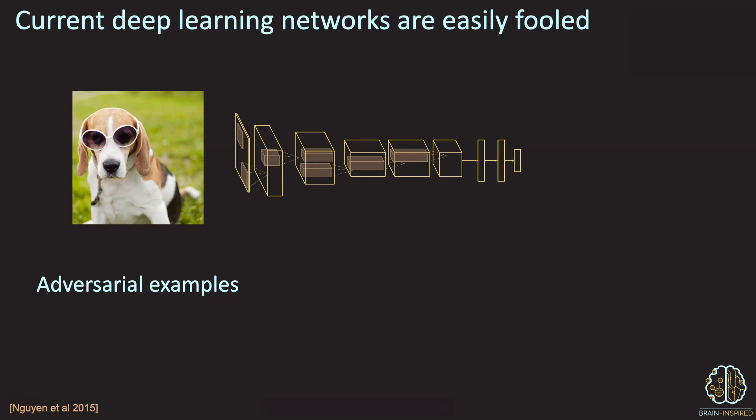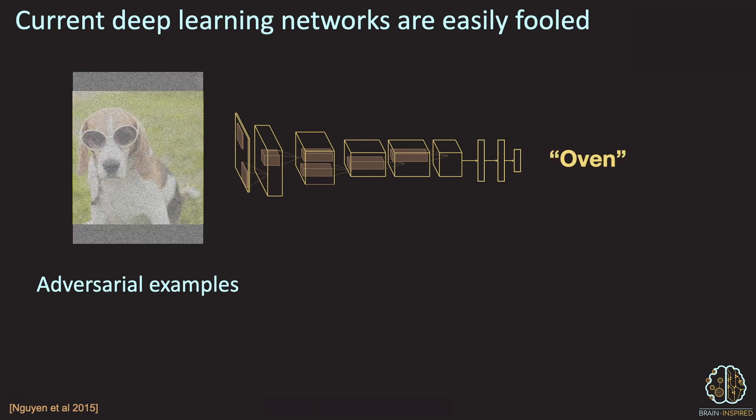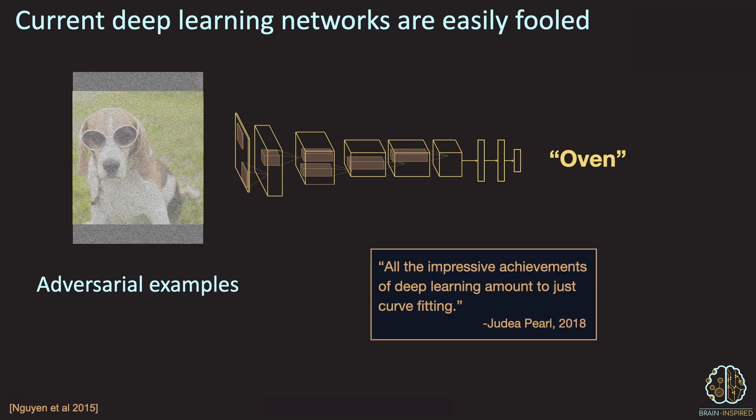Adversarial examples are another popular way to illustrate how narrow and brittle deep learning is. Back to our dog detector here, you can add the right kind of noise to an image, and we still know that it's a dog, but now the network might report that it's an oven. And these kinds of failures have led to plenty of criticism of the current deep learning flavor of AI. For example, Judea Pearl says, all the impressive achievements of deep learning amount to just curve fitting.